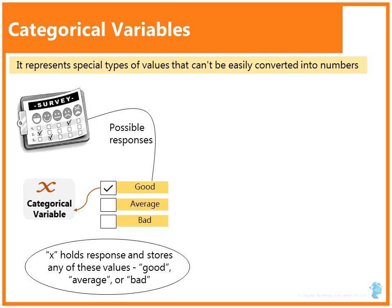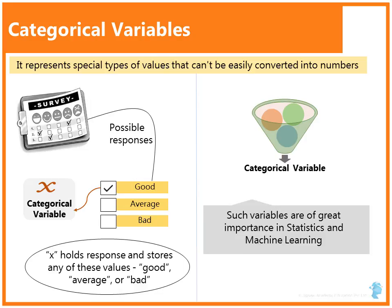Similarly, we can store colors like red, blue, green in another categorical variable. Such variables are of great importance in statistics and machine learning. We learn more about categorical variables during our discussion on classification problems.